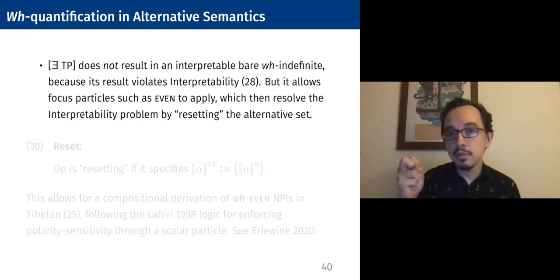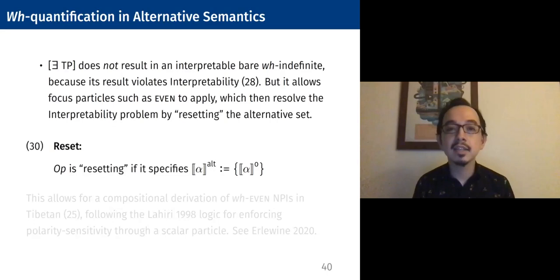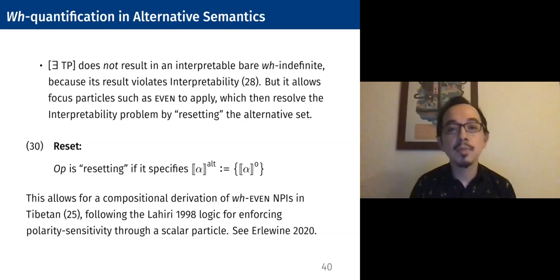Using the existential operator that I just defined, applying it to the TP containing a WH phrase will not result in a bare WH indefinite because the result violates interpretability — just disjoining and creating an existentially closed form as the ordinary value violates interpretability because it's not itself an element in the set of alternatives. But by defining an ordinary value, it allows focused particles like even to then apply. And focused particles, as noted by Beck, have a property I'll call resetting — where it lexically specifies the resulting alternative set to have a singleton set denotation of just the ordinary value. This allows for compositional derivation of WH-even NPIs in Tibetan, following the Lahiri logic for enforcing negative polarity sensitivity through a scalar particle even.